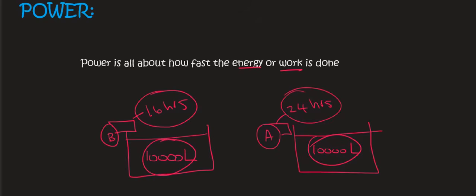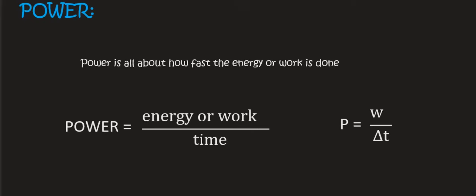So in formula terms, power is equal to the following. Power is equal to the energy or work divided by the time. In formula terms, and you do get this on your formula sheet, it's equal to W, which stands for work, but remember that's the same as energy divided by the change in time.